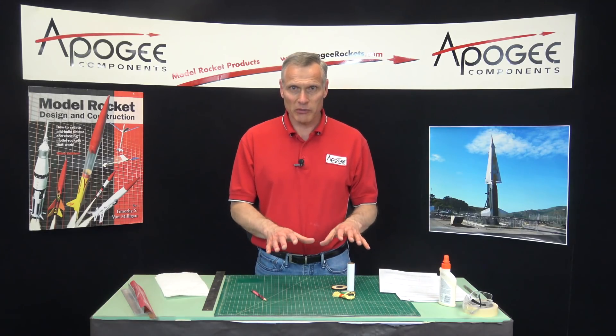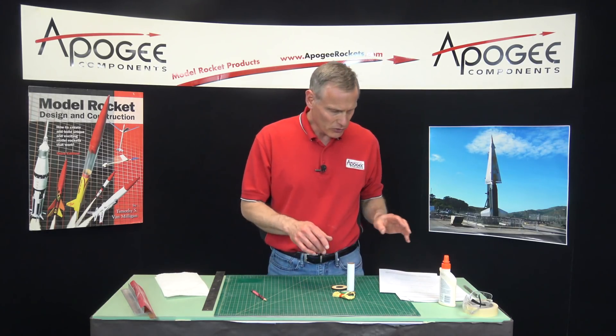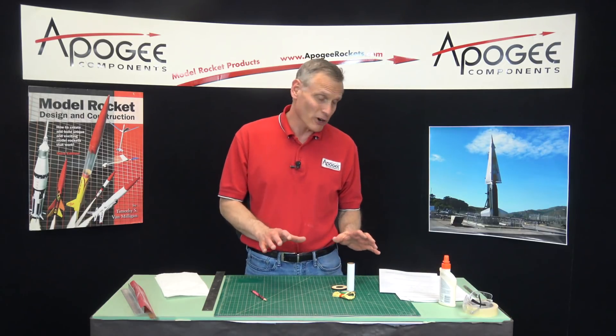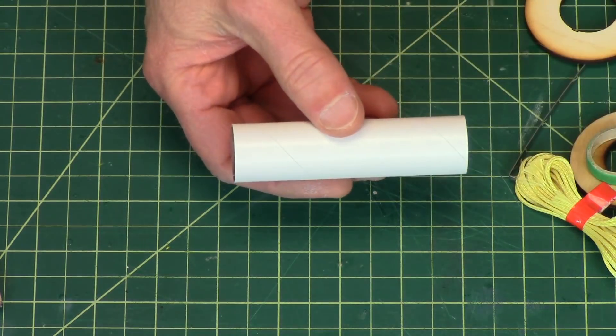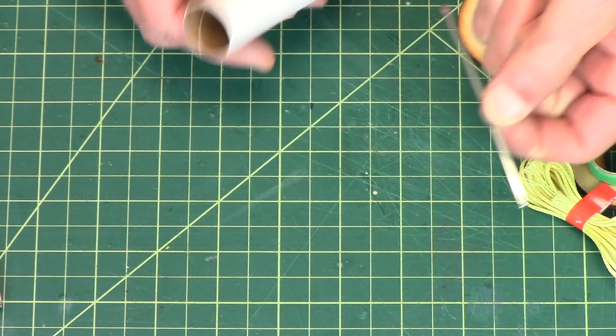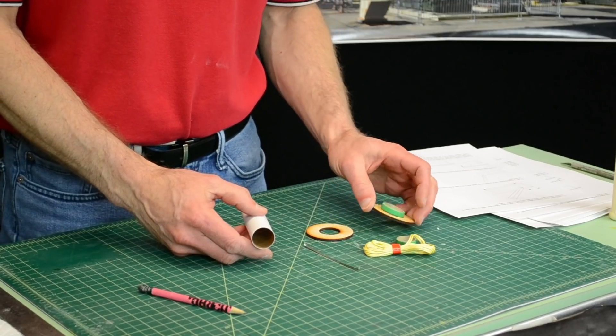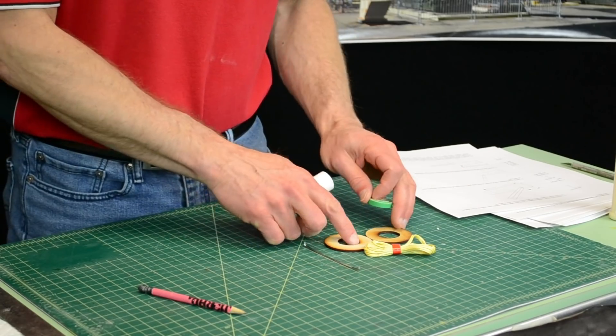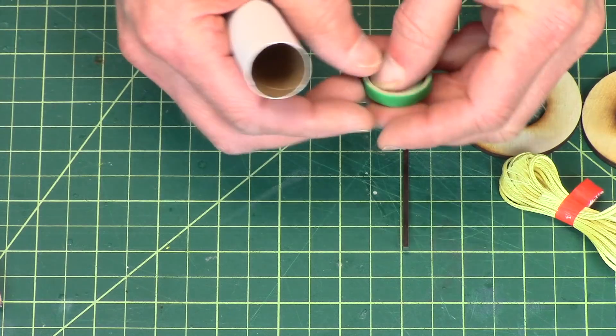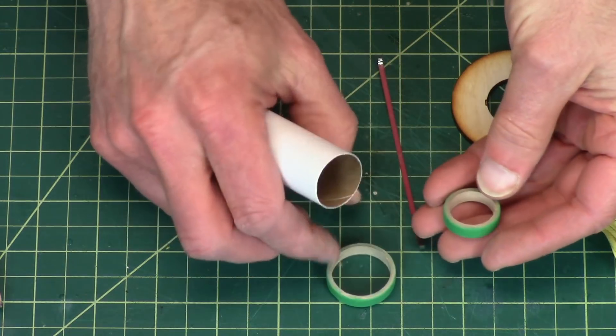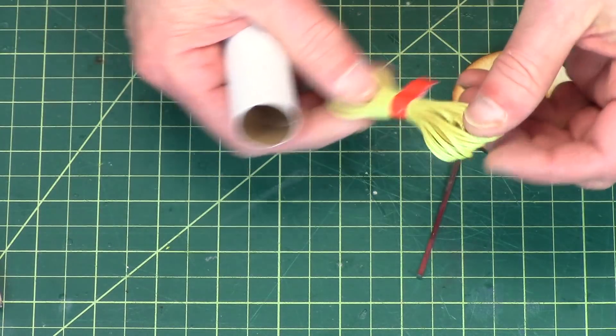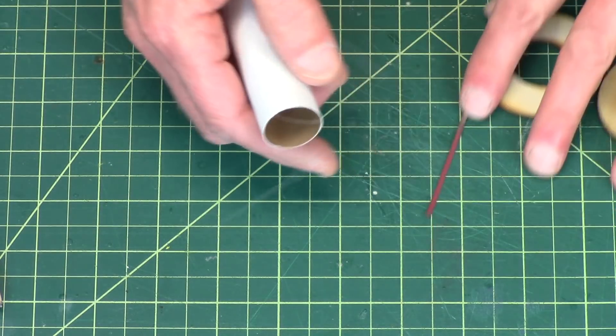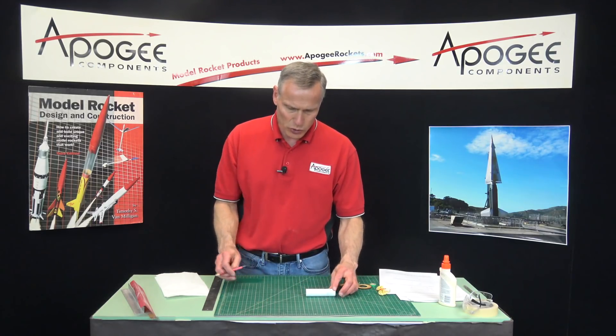This is going to be building the engine mount for the flying machine rocket. You're going to want to find the 24 millimeter tube, the long engine hook, the two centering rings, and then one big green ring and one of these smaller ones, plus your Kevlar shock cord, the heavy version.